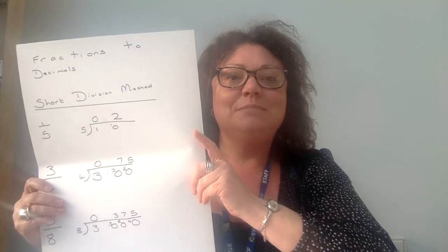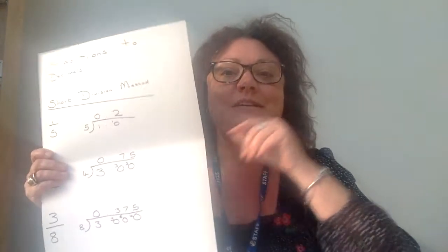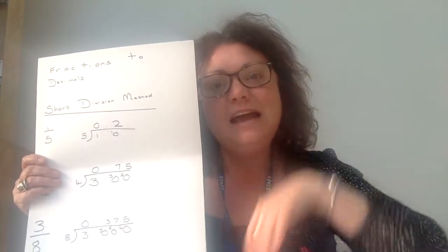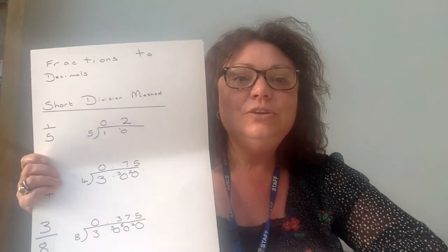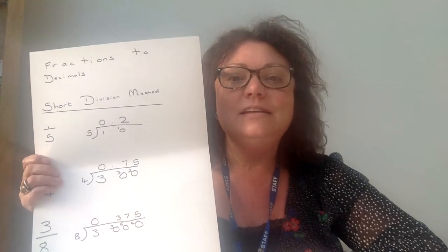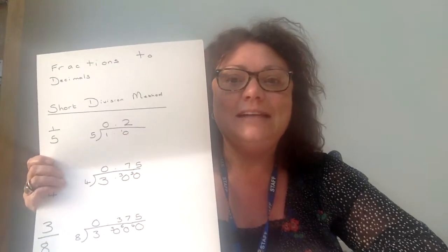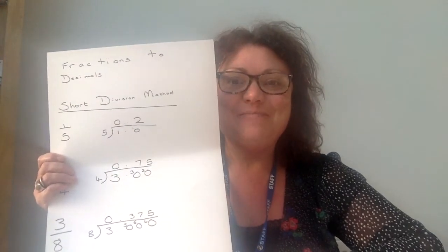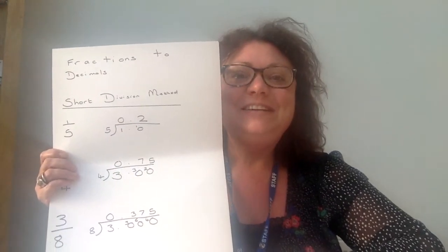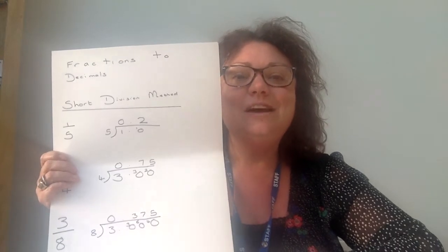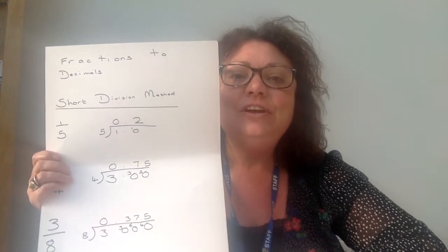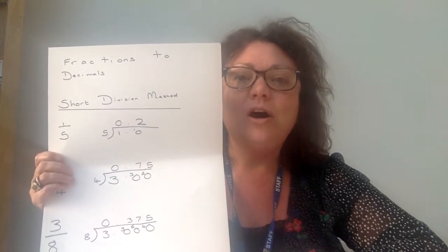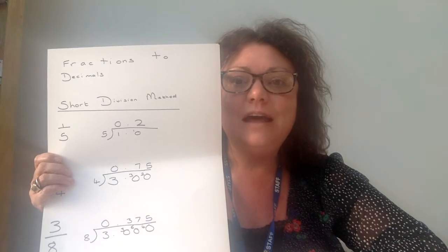So the short division method is to convert a fraction to a decimal. You can divide the denominator into the numerator. So for example, when we have got one fifth, you can divide one by five.